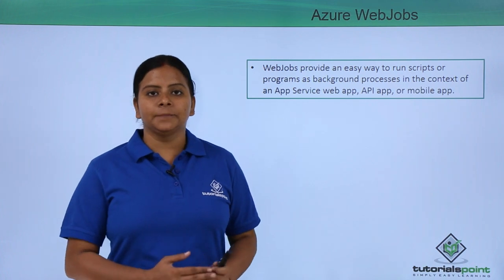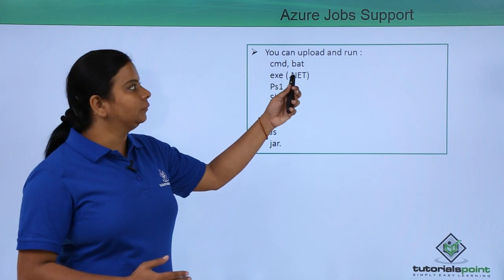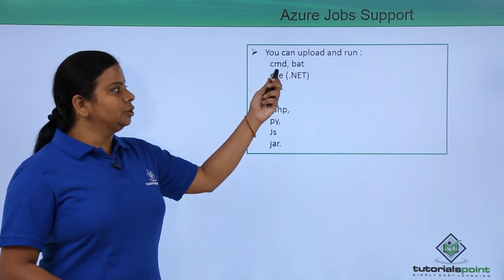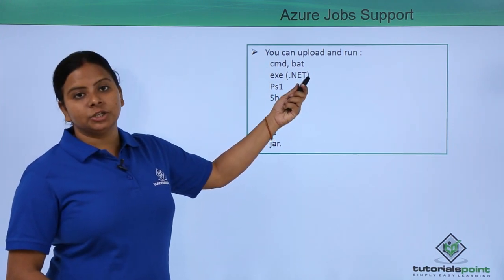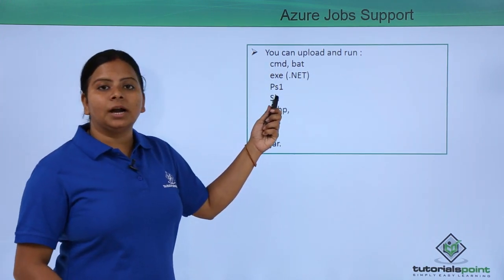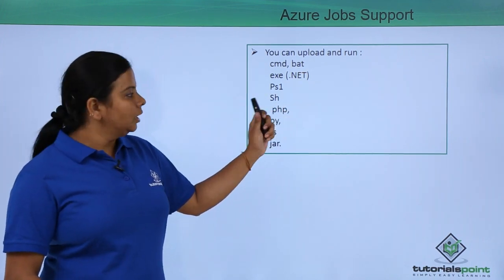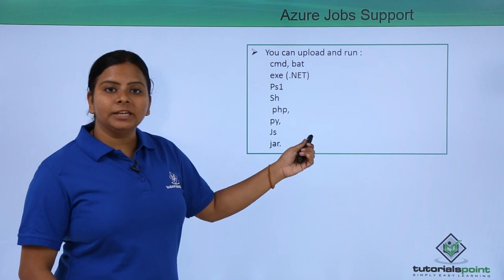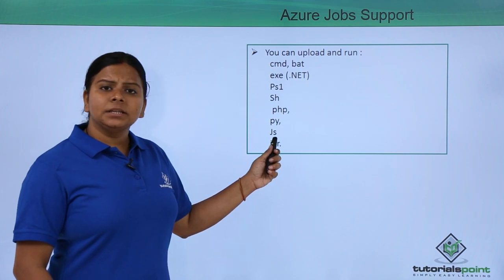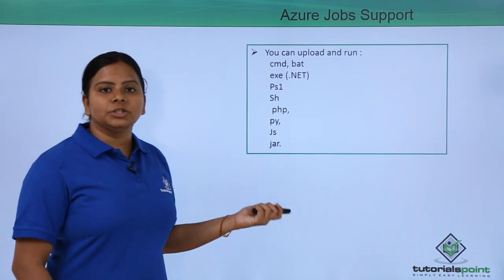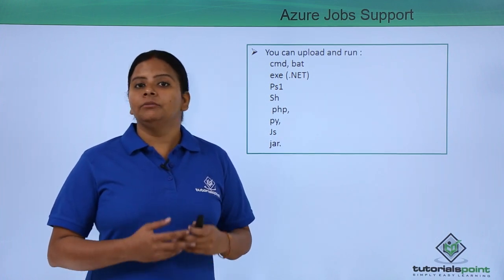If you want to create your web jobs, there are different upload and runtime options. Generally we can use CMD or batch files, EXE files created in .NET, PowerShell scripts, shell scripts, PHP scripts, Python scripts (.py), JavaScript (.js), as well as JAR files. We can use these kinds of files to run your job.